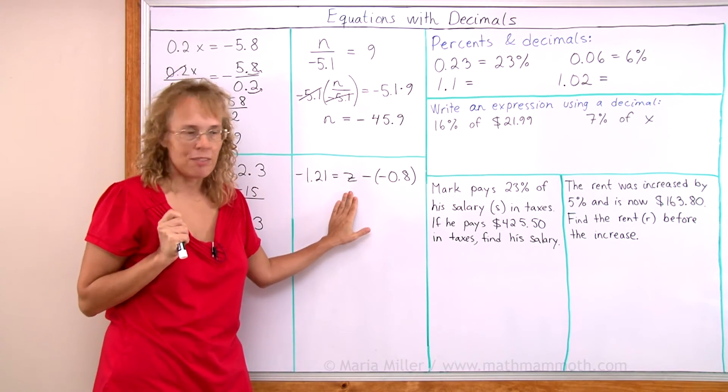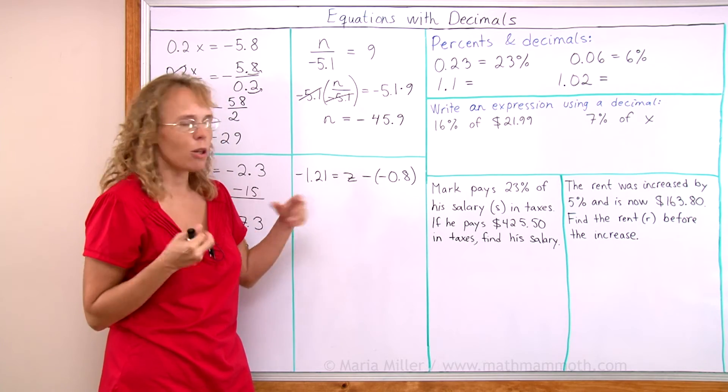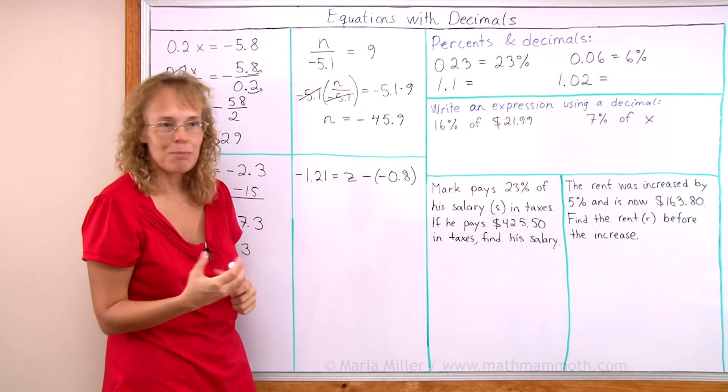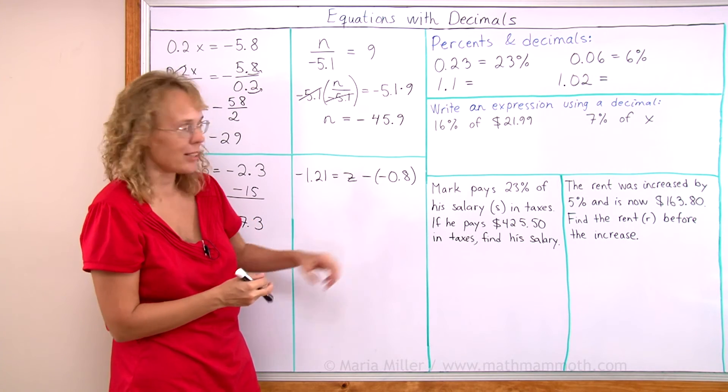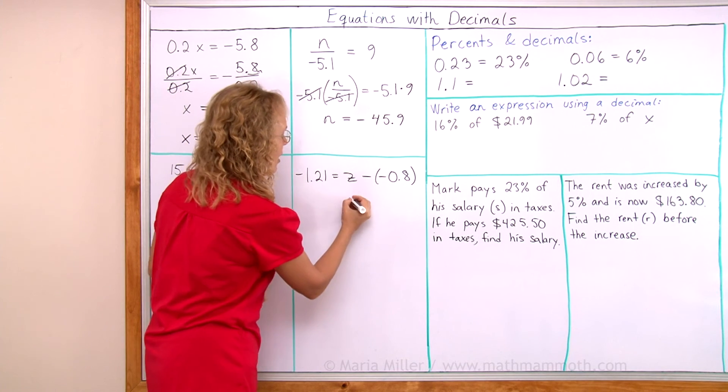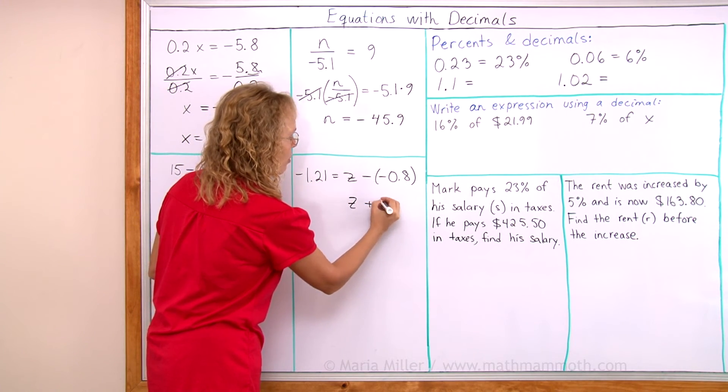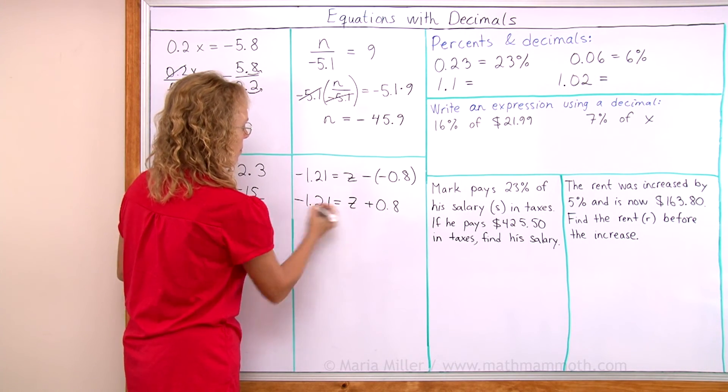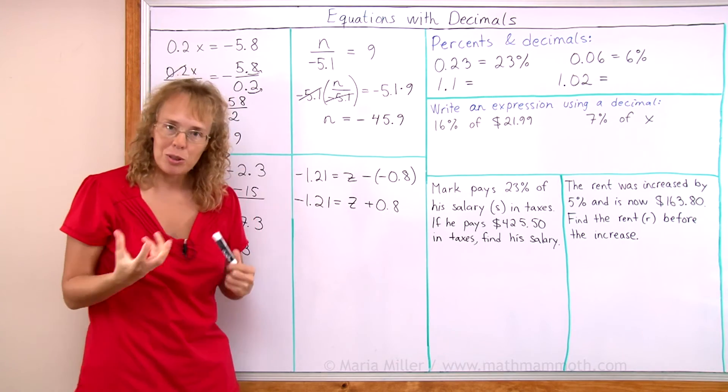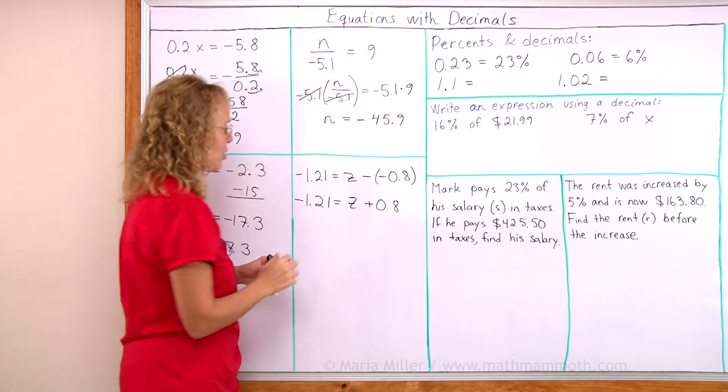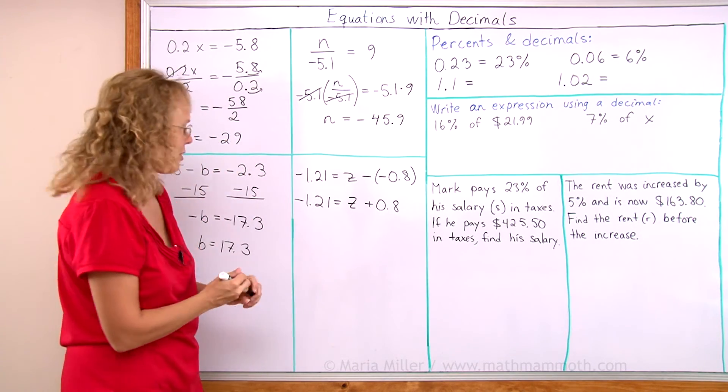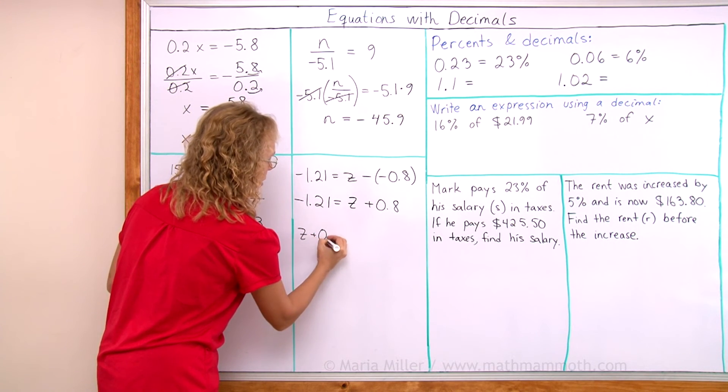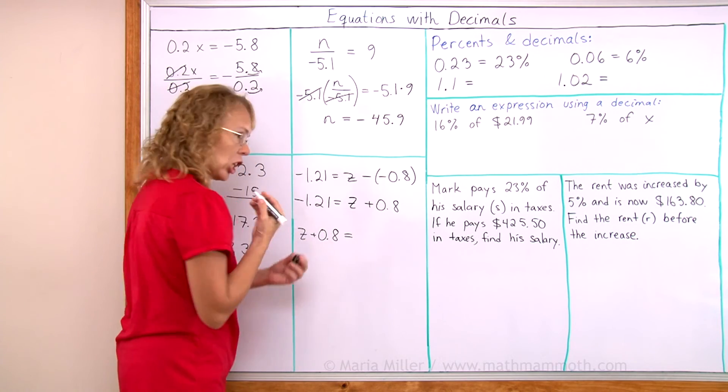Here I will simplify first because this double negative is always a little complicated to handle otherwise. But it becomes very simple when I change it to just a plus. So I will rewrite this as z plus 0.8. On this side it's negative 1.21. And now if you want to you can flip these two sides so that you get your variable on the left side as it's customary. It's not absolutely necessary but it often makes things look easier.